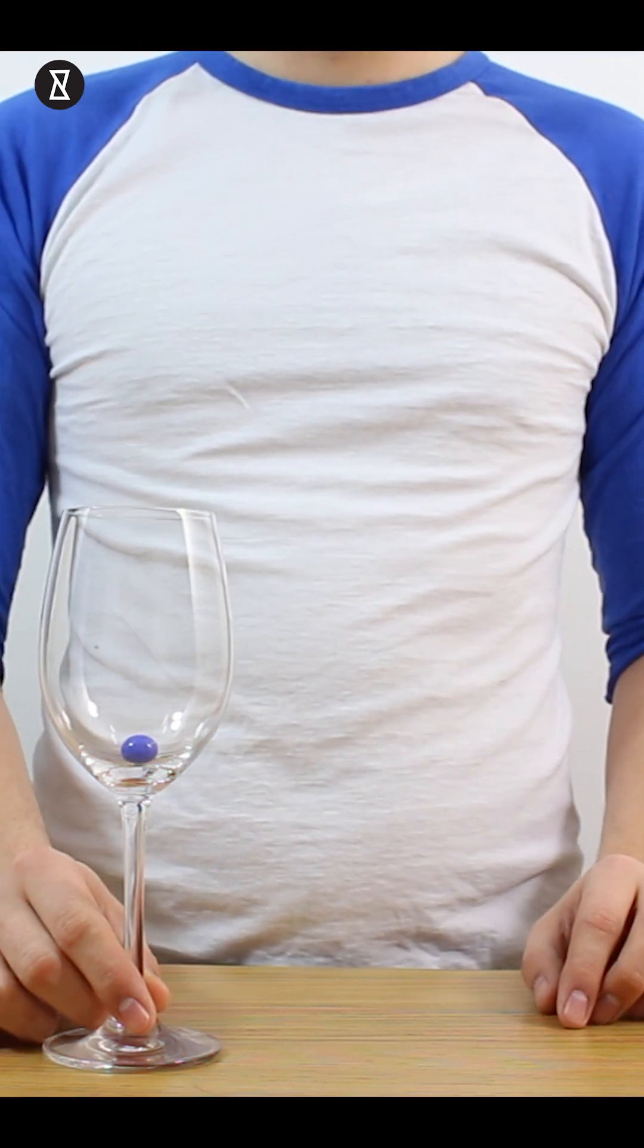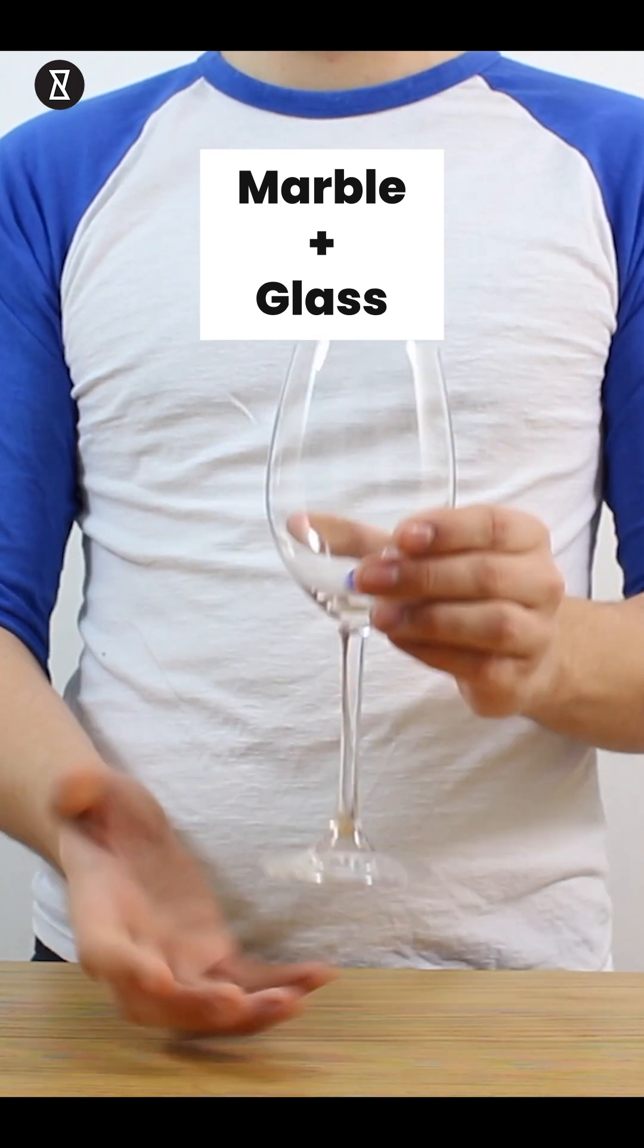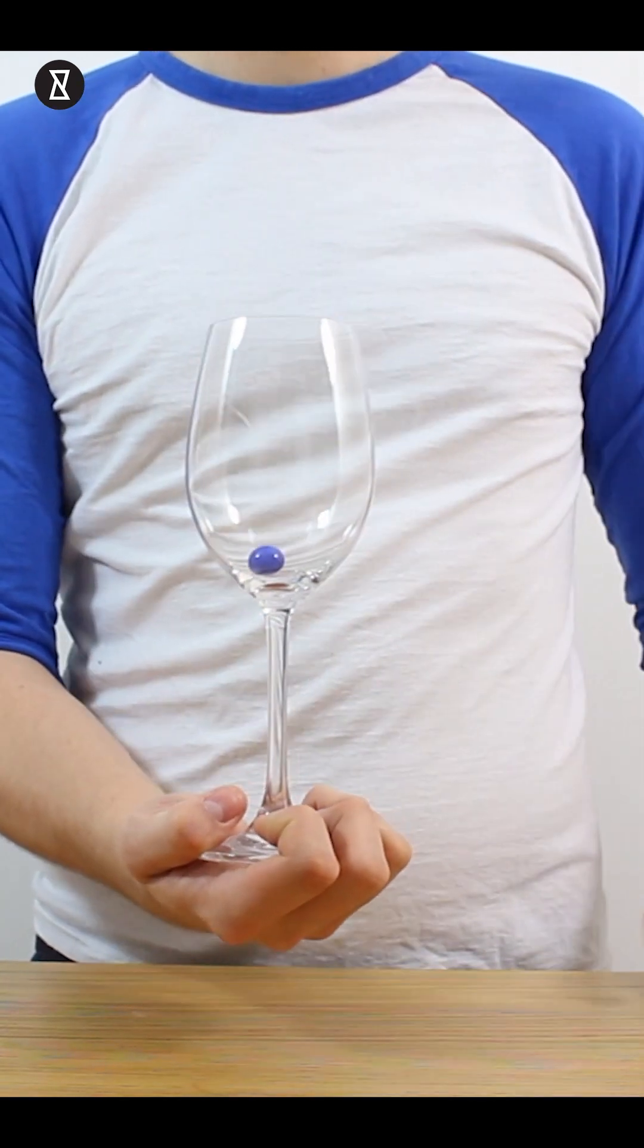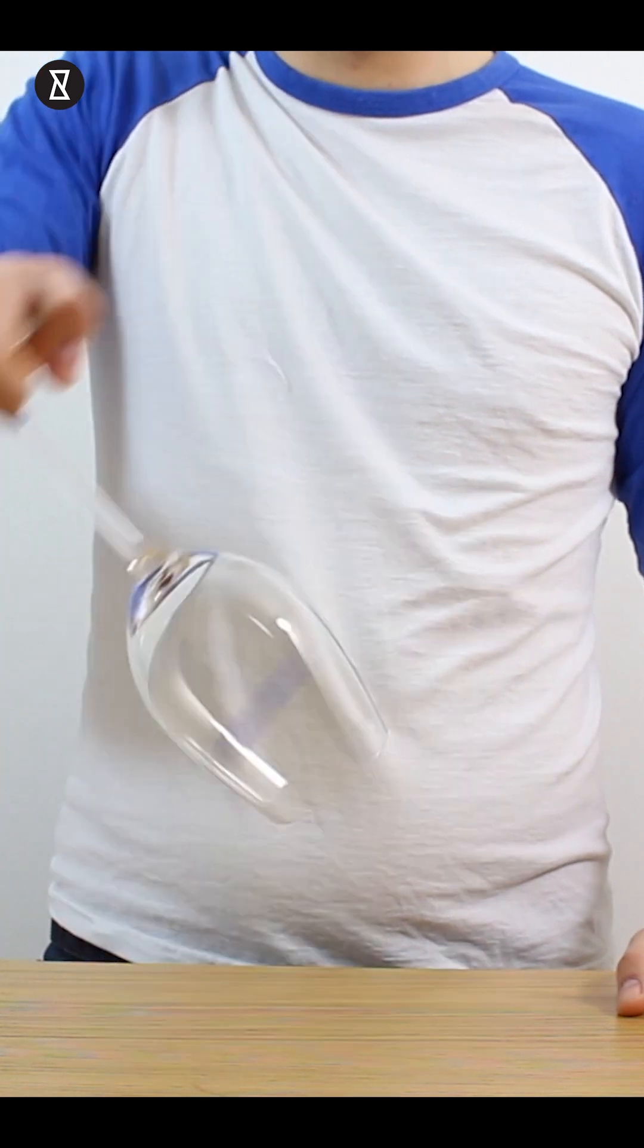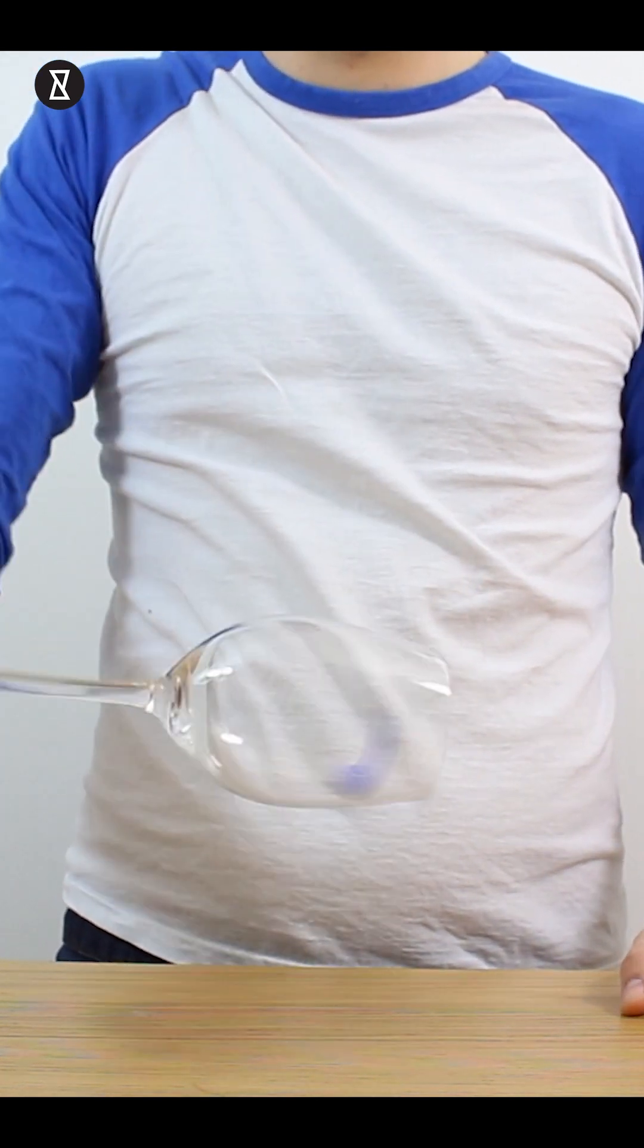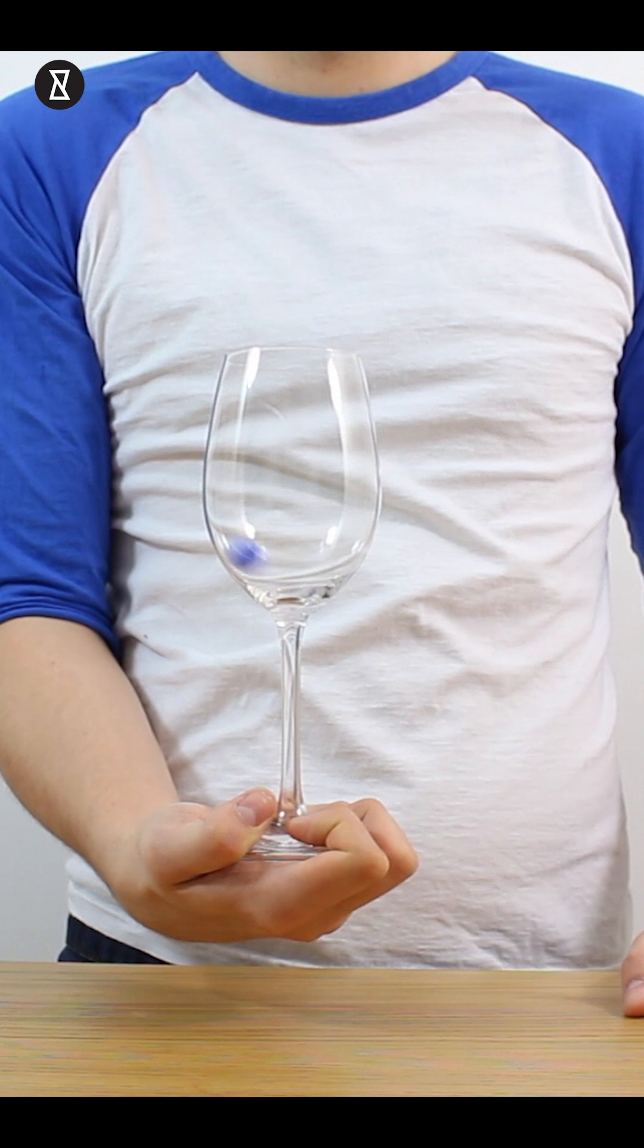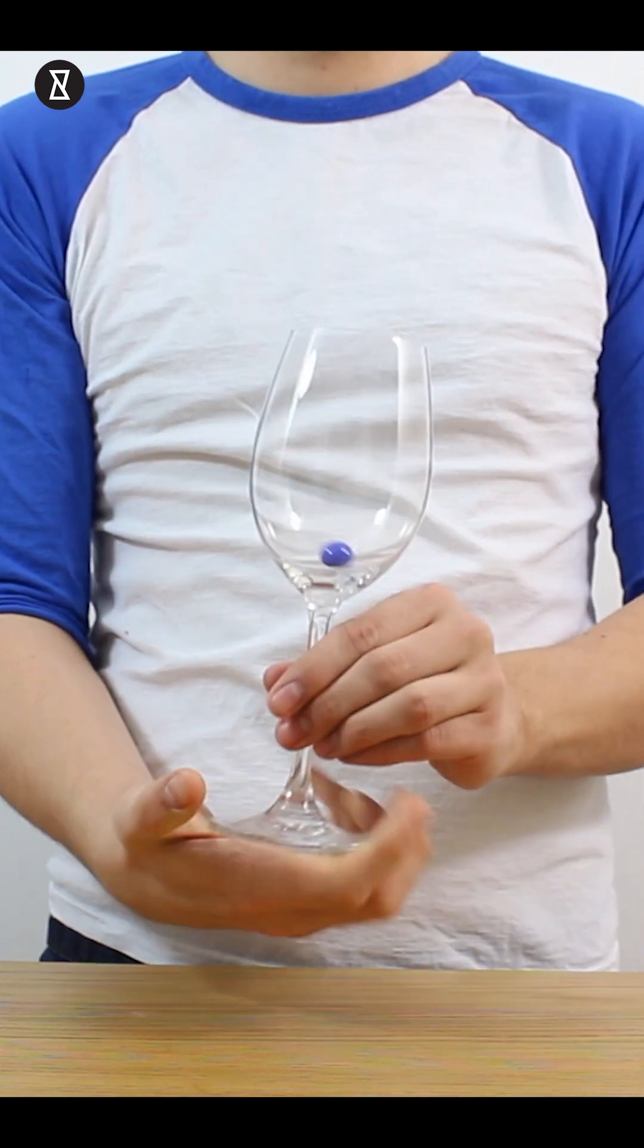Gravity marble. The first step is to put the marble inside the glass and hold the glass very firmly by the base. If you spin the glass around very quickly, you'll see the marble travels in a circle around it inside. And as you turn it upside down, the marble continues to spin around and doesn't fall out.